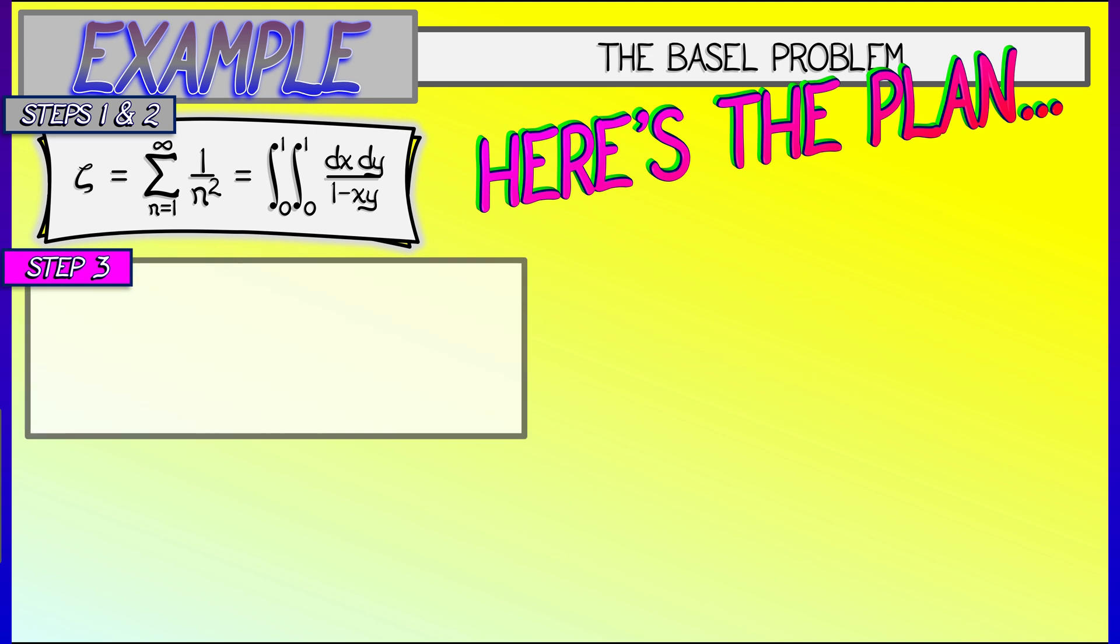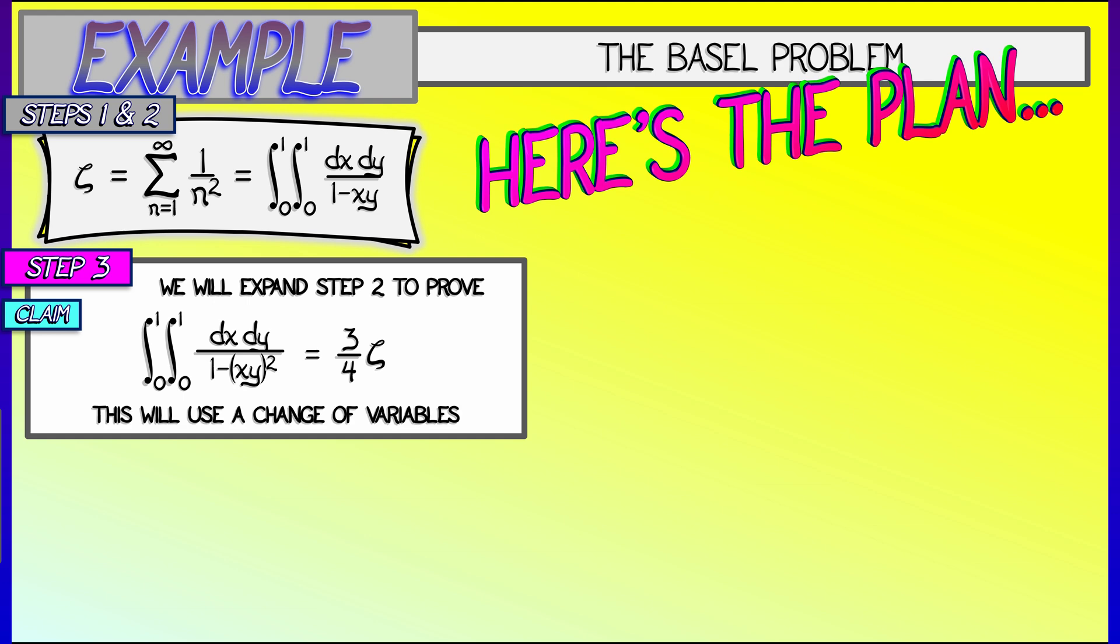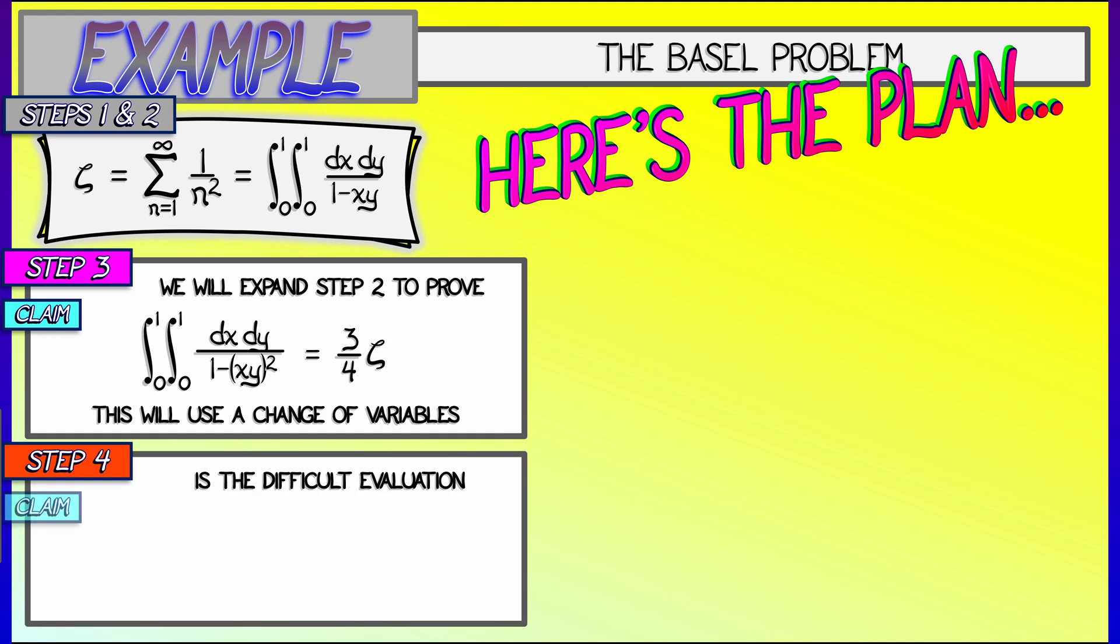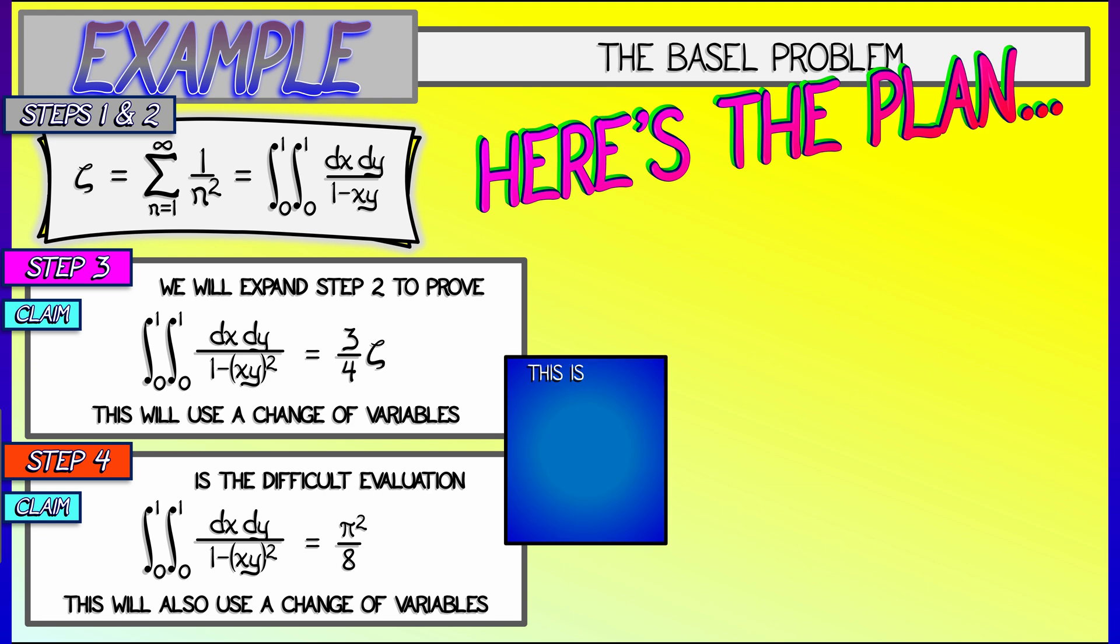The next step, step three, is going to be to expand on step two. I'm going to rewrite that double integral for zeta as something new. I'm going to integrate 1 over 1 minus quantity xy squared. And we're going to find that integrating that gives 3 quarters zeta. This is going to use a change of variables, as is the really difficult one, which is actually evaluating that double integral, the integral of 1 over 1 minus quantity xy squared and getting pi squared over 8.